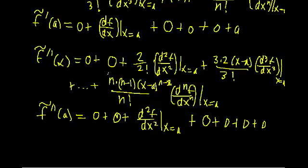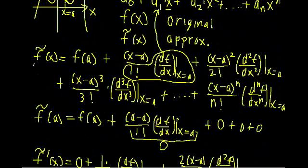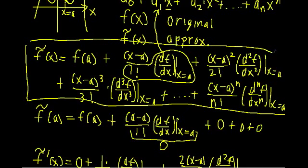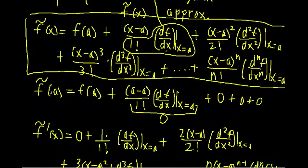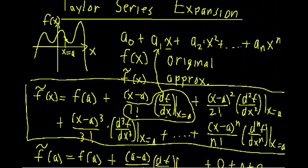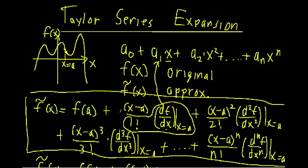To recap: the Taylor series expansion for an arbitrary function f of x has three components in each term. The x minus a term ensures higher order terms cancel when you plug in x equals a. The factorial term ensures we're not off by a factor when taking successive derivatives. And the derivative term evaluated at a constant ensures the derivatives of our approximation match the derivatives of our original function. Hopefully that wasn't too confusing — you'll see this again and again.